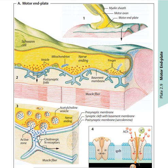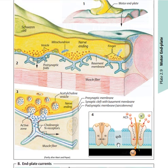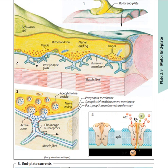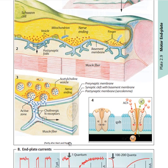All these vesicles are going to bind to the membrane of the muscle cell. In the membrane of muscle cells, we have acetylcholine. Acetylcholine is going to bind to this ionotropic receptor, causing sodium ions to move inside and potassium ions to move outside the cell.